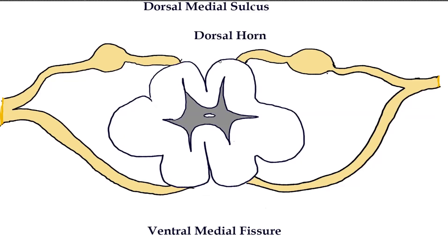The next structure we're going to cover is the dorsal horn. This is going to be part of the gray matter. With this spinal cord, we have gray matter towards the center and white matter towards the outside. I want you to think back to the brain and how this was arranged — especially with the arborvitae. In the brain, it was the gray matter that was more superficial while the white matter was deeper. In the spinal cord, it's reversed — the gray matter is actually more deep while the white matter is more superficial. With the gray matter, we have these three horns. The dorsal horn is right here.